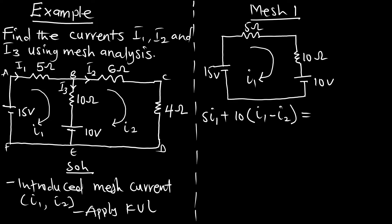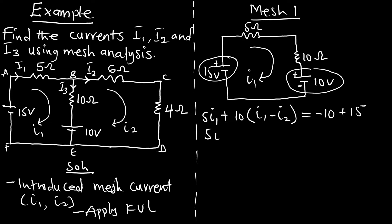Looking at the voltage sources: the mesh current comes out from the negative side of the 10V source, giving negative 10, and from the positive side of the 15V source, giving positive 15. So 5i1 + 10(i1 − i2) = −10 + 15 = 5, which simplifies to 15i1 − 10i2 = 5 as equation 1.